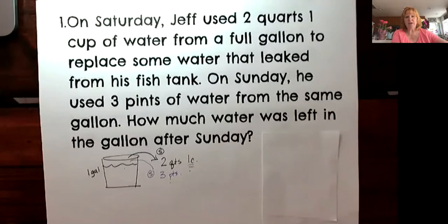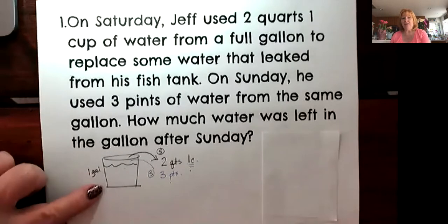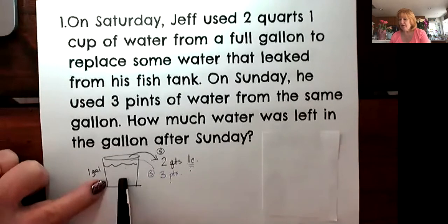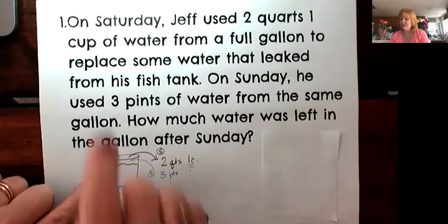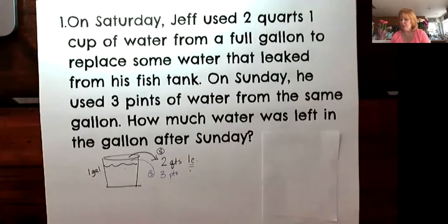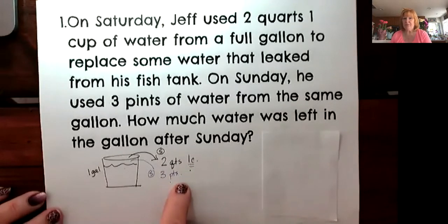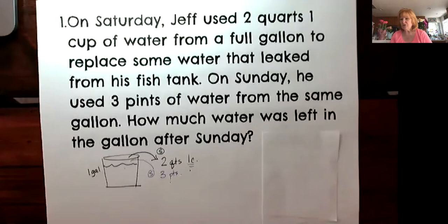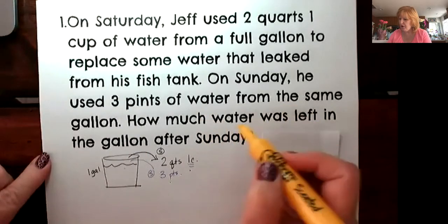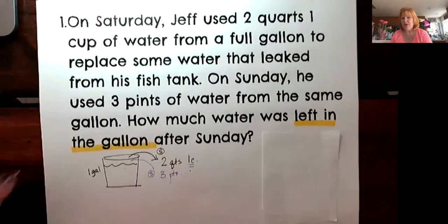As we look at this, we need to figure out what they're talking about, because there's a lot here. I know that I have two days. I have Saturday and Sunday and I have a gallon of water. So I'm going to put a bucket here with a gallon. On Saturday, two quarts and one cup came out of the gallon. Then on Sunday, three pints came out of it. They want to know how much water was left in the gallon after these things are taken out.